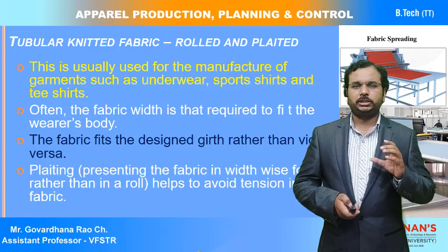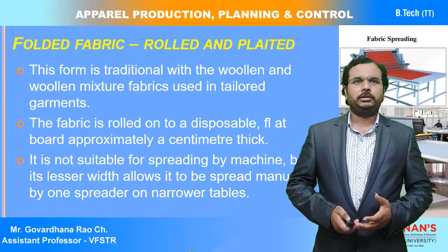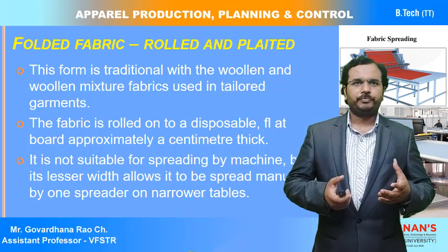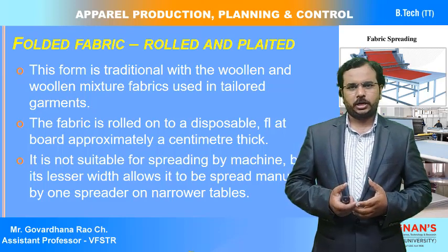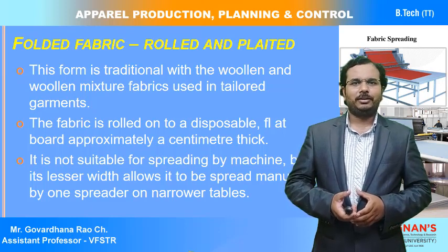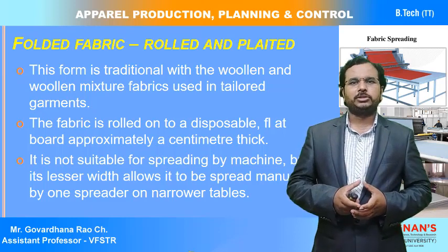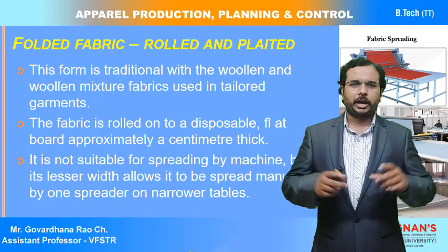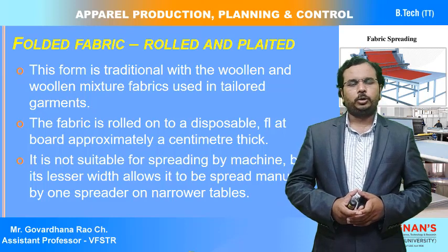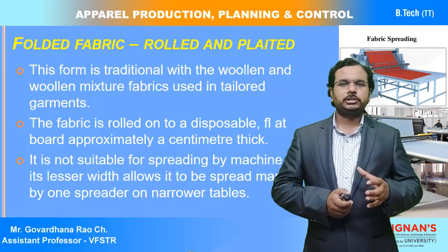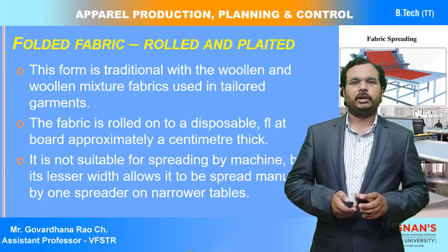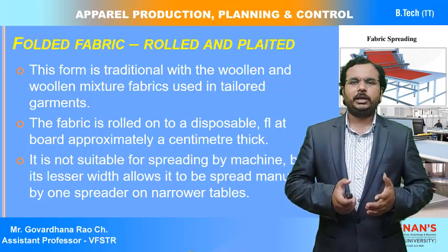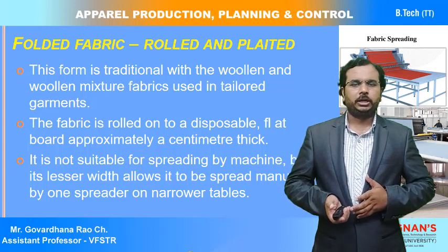So knitted fabrics are available in rolled form and plated form. The next form is folded fabric — traditional fabrics like handloom and power loom fabrics generally come in folded form. Sometimes a rectangular cardboard is used and the fabric is plated or rolled onto it. This traditional type of fabric packaging is generally used for smaller ordered quantities.